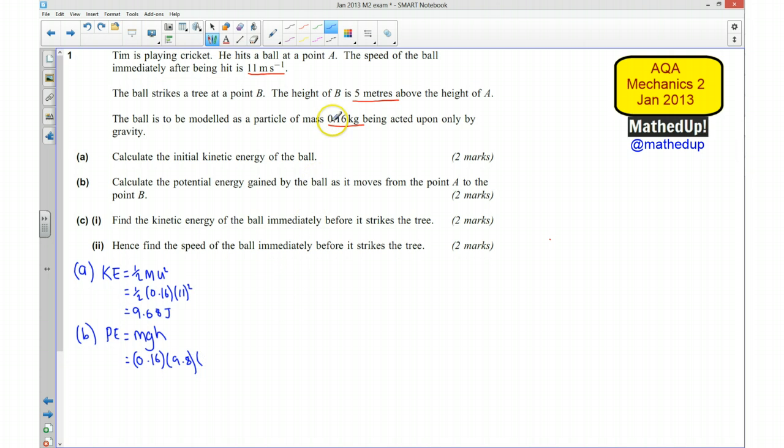And my height is going to be, well, it's got a height of 5 metres above the height of A. And because we're looking for the potential energy gained by the ball as it moves from A to point B, that's going to be our reference point. So I'm going to use 5.